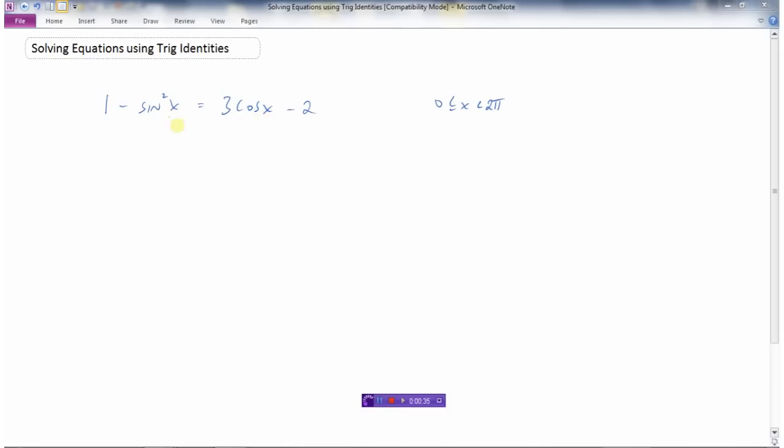Usually when we solve equations, we can only have one trig expression. The problem here is we have sine and cosine in the equation. But looking at this expression on the left, we have the identity that sin²x + cos²x = 1. So 1 - sin²x is the same thing as cos²x. I could replace 1 - sin²x with cos²x, and now I have an equation that has only cosine in it.